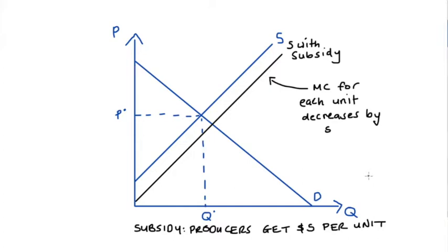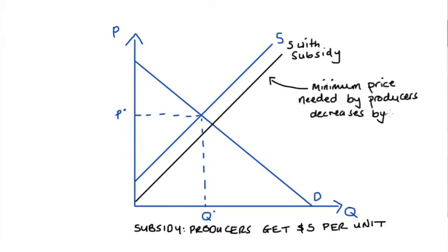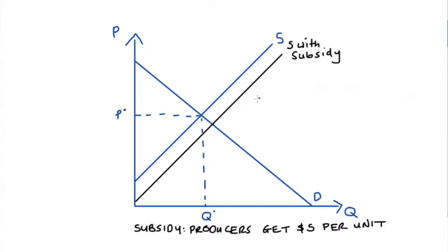Another way to think about it: the supply curve tells us the minimum price needed to incentivize the producer to supply a particular amount. If we subsidize the producer s dollars per unit, this minimum price decreases by exactly s, giving us a downward shift of the curve. The key to understanding subsidies — much like taxes — is that once we impose a subsidy, the price that producers receive is now different from the price that consumers pay.